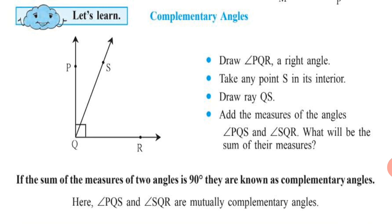For that, let us do a small assignment. Look at the following figure. Draw Angle PQR as a right angle. Take any point S in its interior and draw Ray QS. Then add the measures of Angle PQS and Angle SQR.